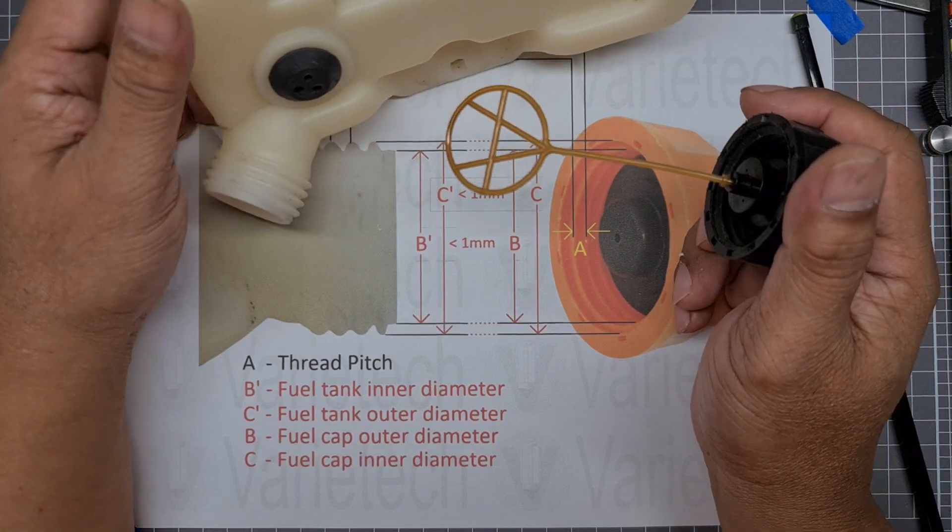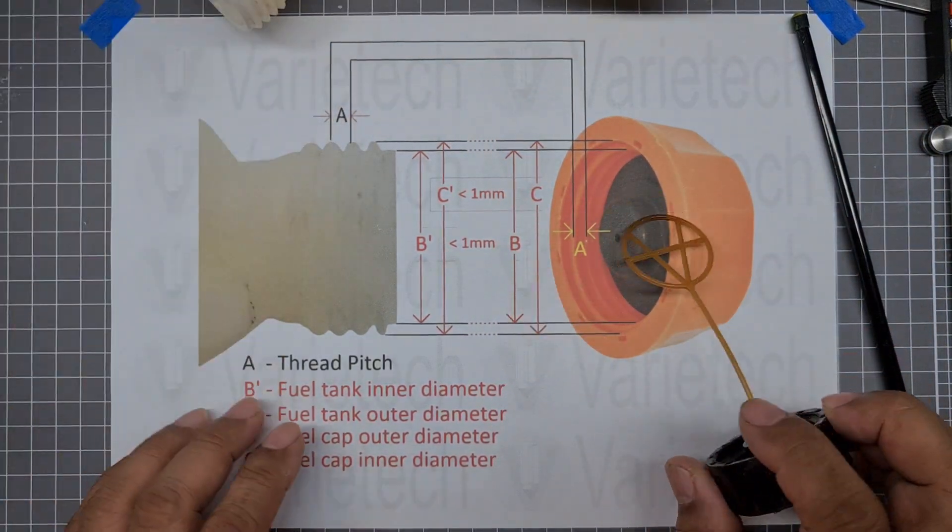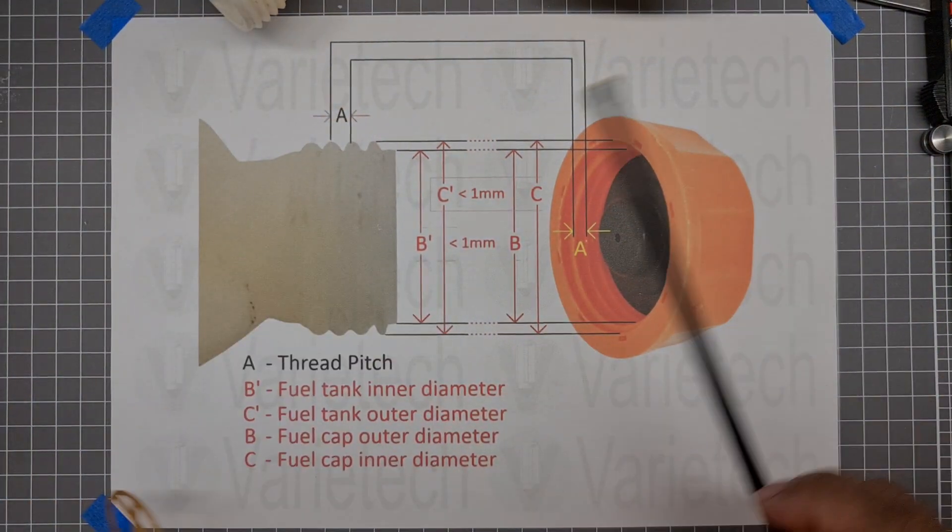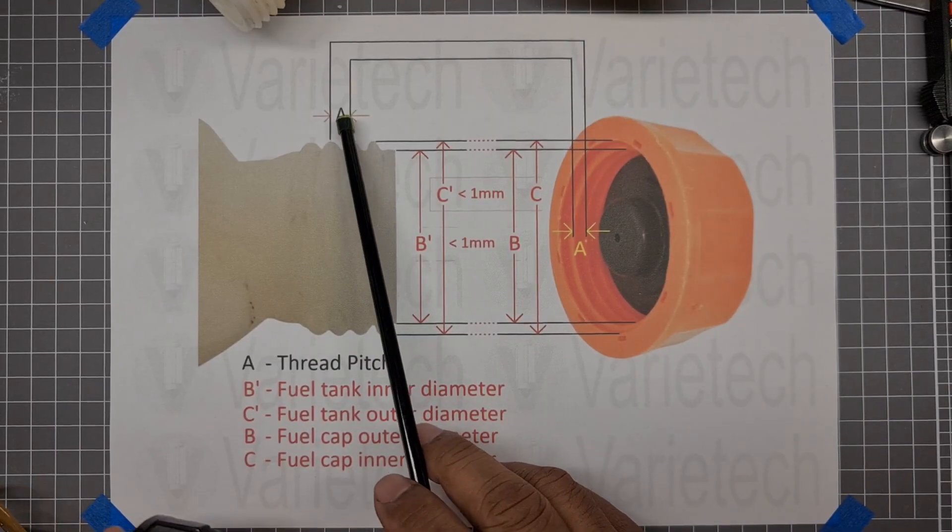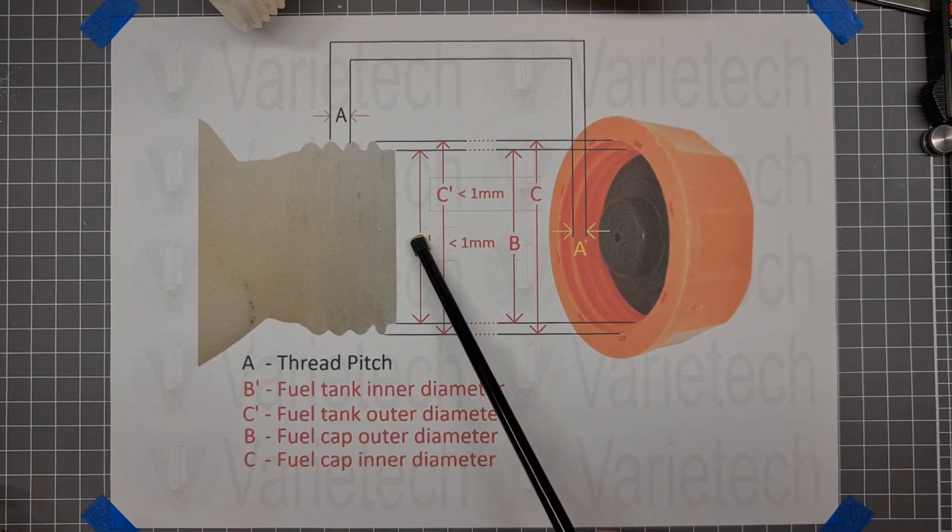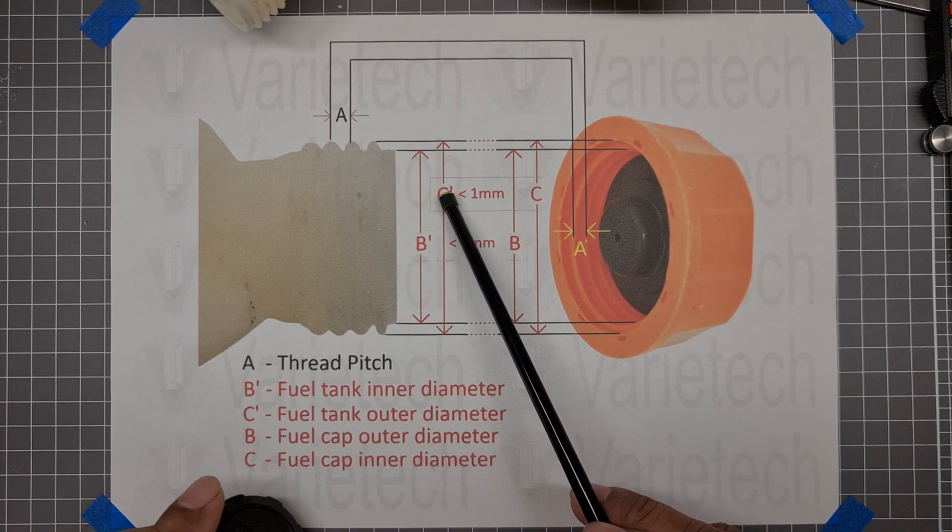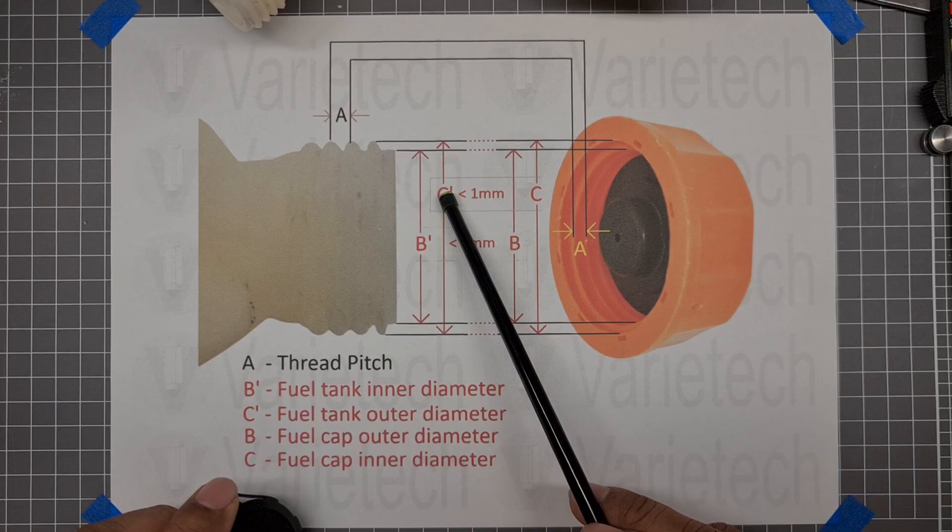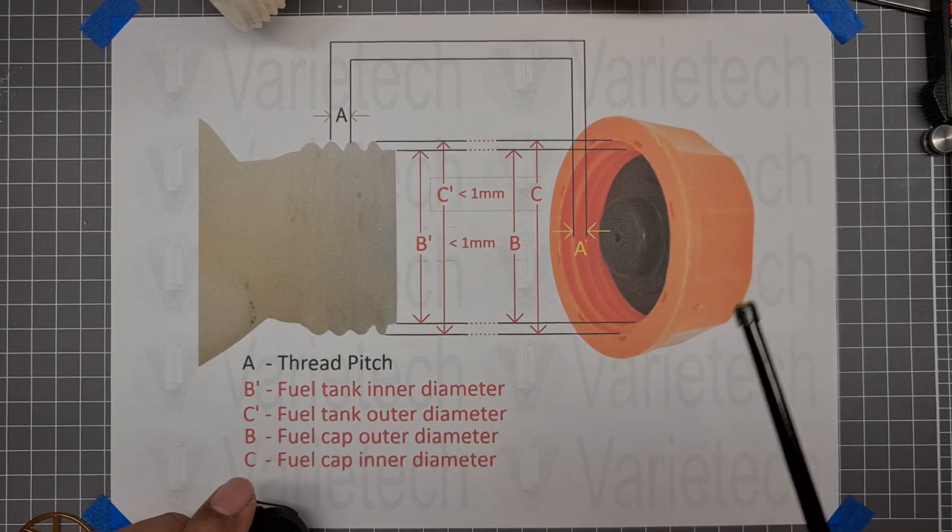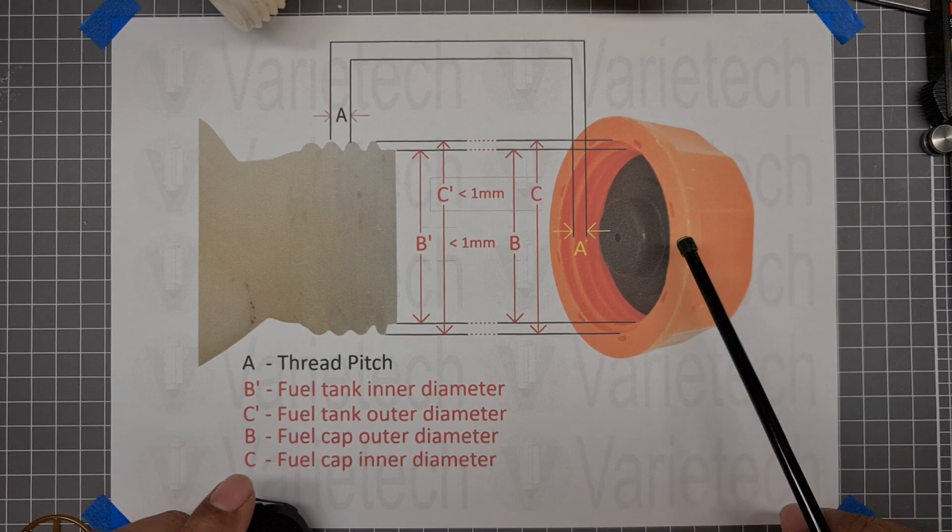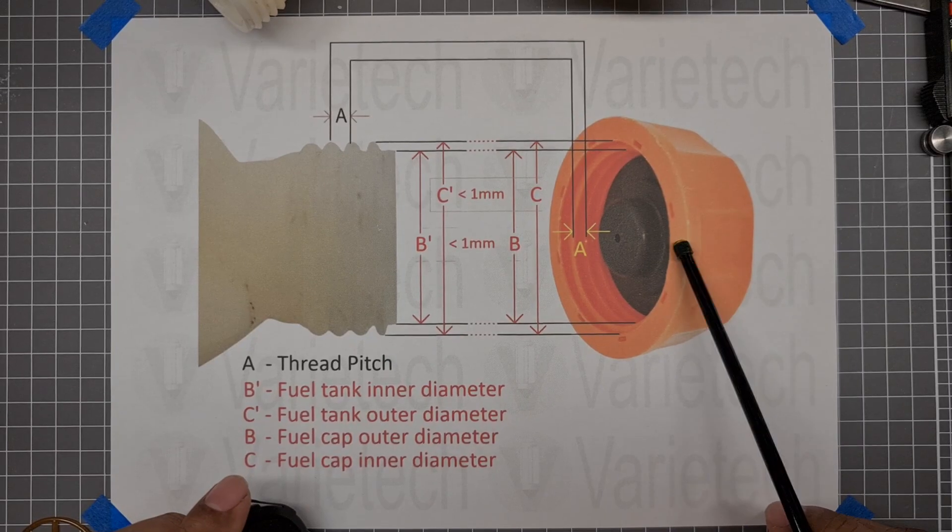And provide me this information: your A, which is the thread pitch, B prime, which is the fuel tank inner diameter, and the C prime, which is the fuel tank outside diameter. And that's all I need in order for me to provide you the quick information if the fuel cap will fit.